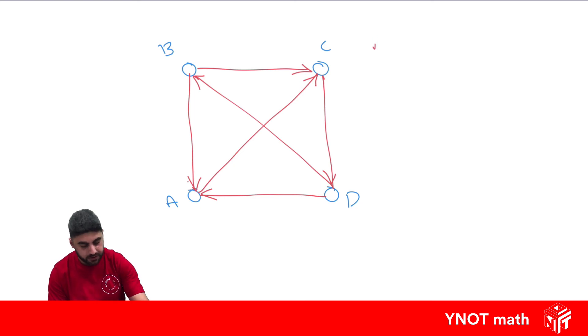A is going to have an in-degree of 2 because it has two arrows coming in, and it's going to have an out-degree of 1 because it only has one arrow coming out of it.